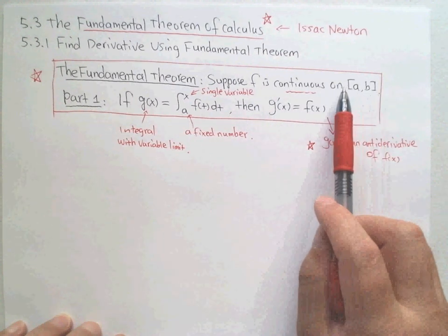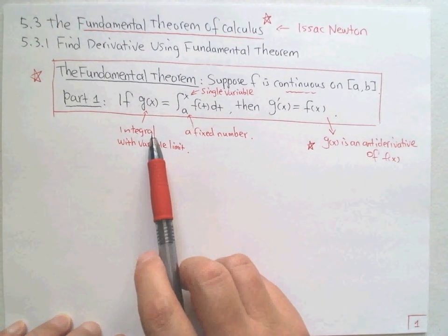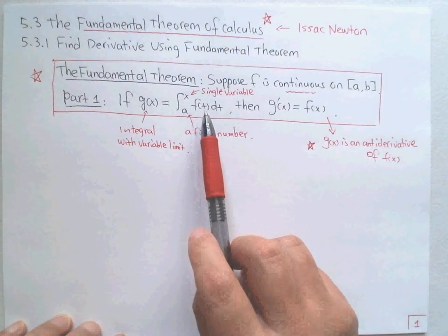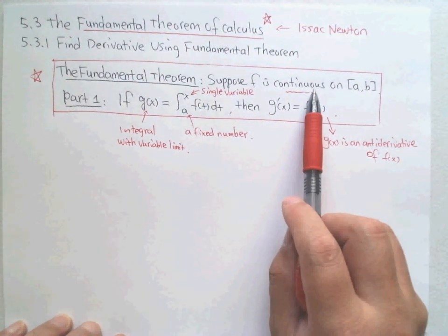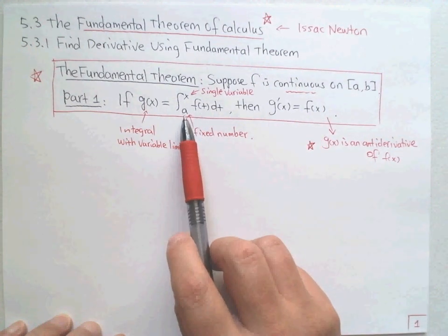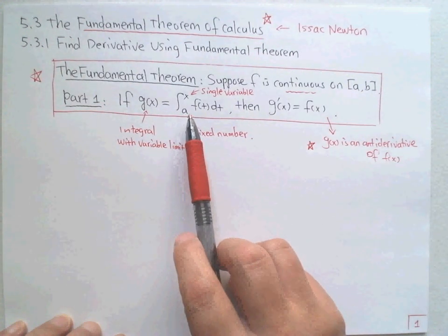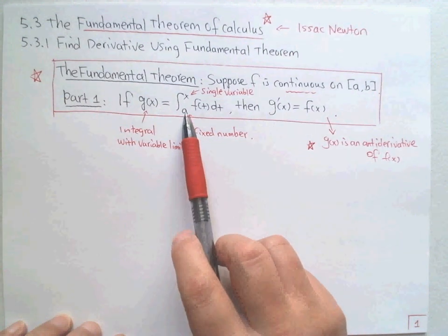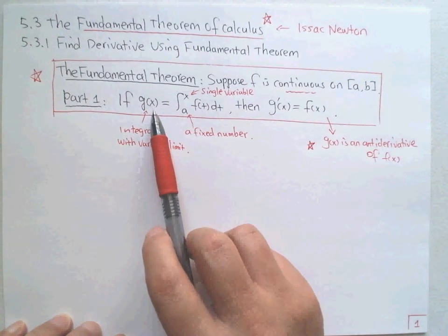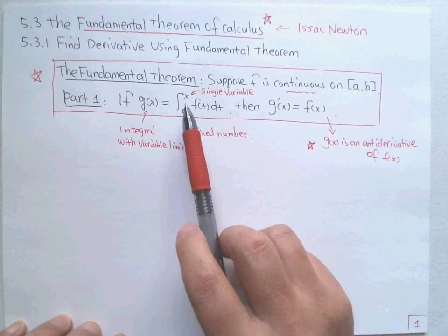We're going to define a function — an integral function. This integral function g(x) has a lower limit of a, which is a fixed constant number, and the upper limit is x, the single variable of the function. So we're taking the definite integral from a fixed number to a variable.